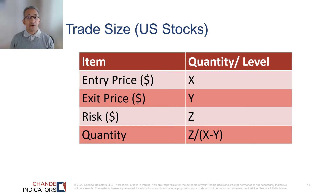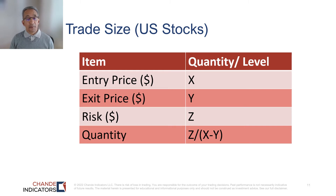I just want to reinforce how to calculate trade size. If your entry price is X, your exit price is Y, and the risk is Z, then the quantity is simply Z divided by (X minus Y). If you use this formula over time, it will give you a good handle on overall risk management and volatility control.